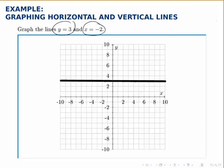Similarly with the second line, x equals negative 2, this one says that this is all the points with an x coordinate of negative 2, regardless of the y coordinate.